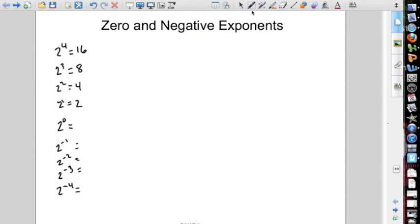As you look at the pattern that we see here, as we look down the line, 2 to the 4th is 16, 2 to the 3rd is 8, 2 to the 2nd power is 4, and 2 to the 1st is 2.